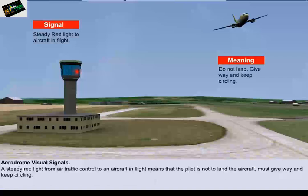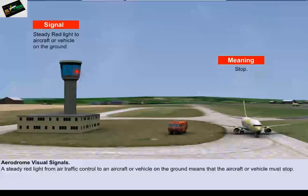A steady red light from air traffic control to an aircraft in flight means that the pilot is not to land the aircraft, must give way and keep circling. A steady red light from air traffic control to an aircraft or vehicle on the ground means that the aircraft or vehicle must stop.